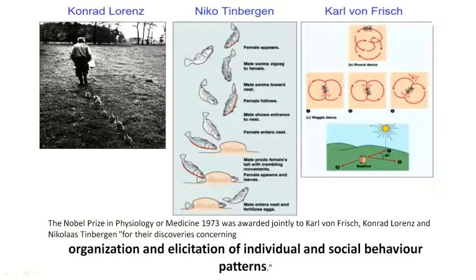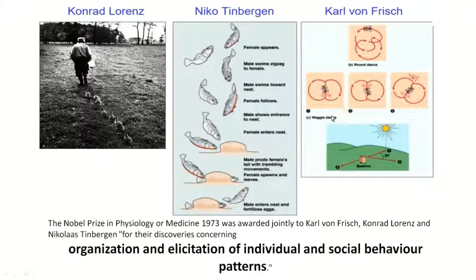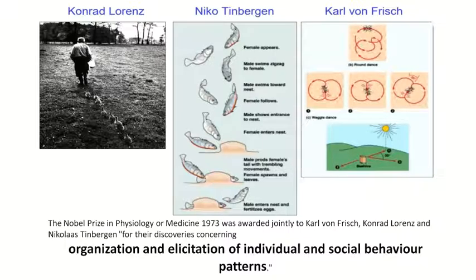In the first image, you can see Conrad Lorenz with many ducklings walking behind him. In the second image, you can see a stickleback fish and its behavior. In the last photo, you can see Frisch's work on bee language. The Nobel Prize in Physiology or Medicine 1973 was awarded jointly to Carl von Frisch, Conrad Lorenz, and Nicholas Tinbergen for their discoveries concerning the organization and elicitation of individual and social behavior patterns.